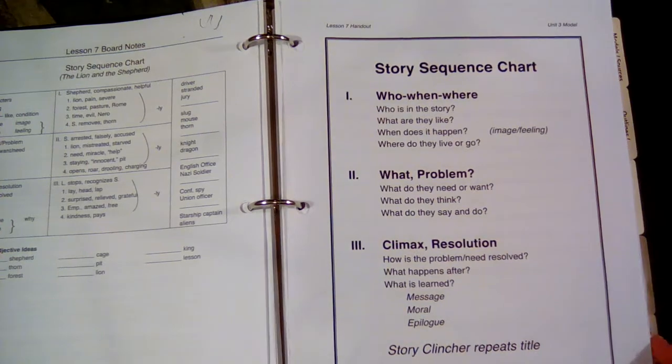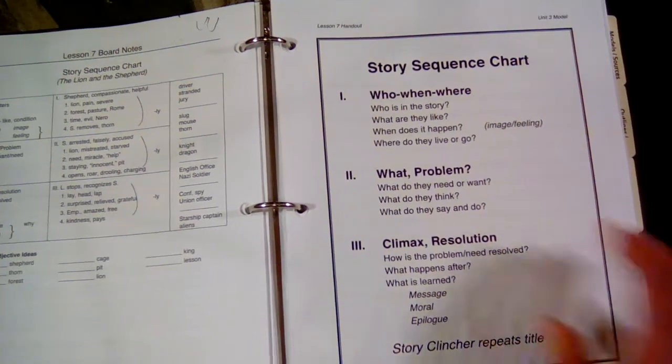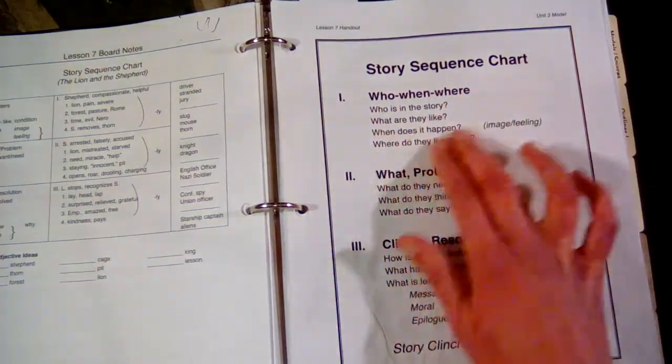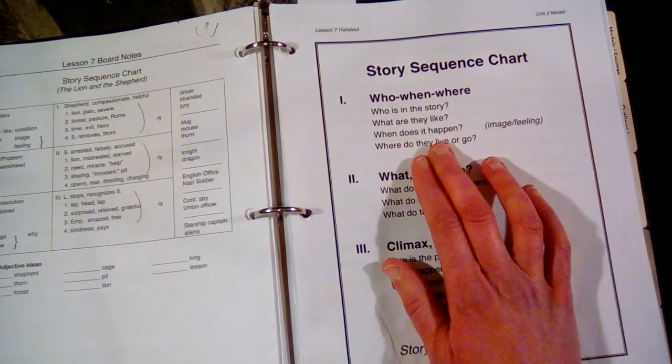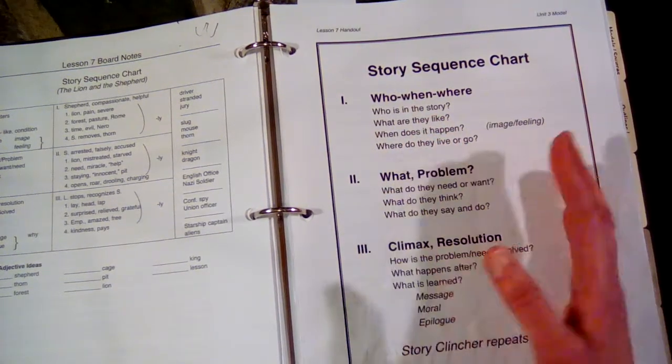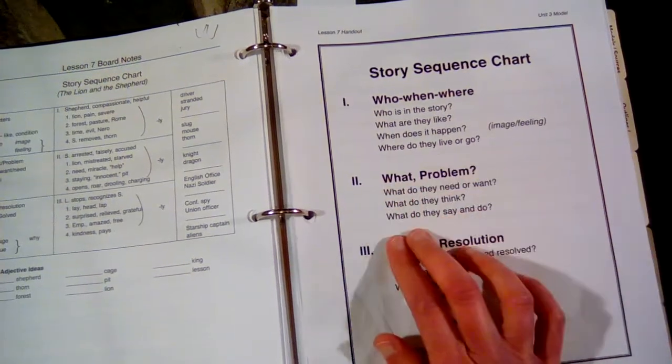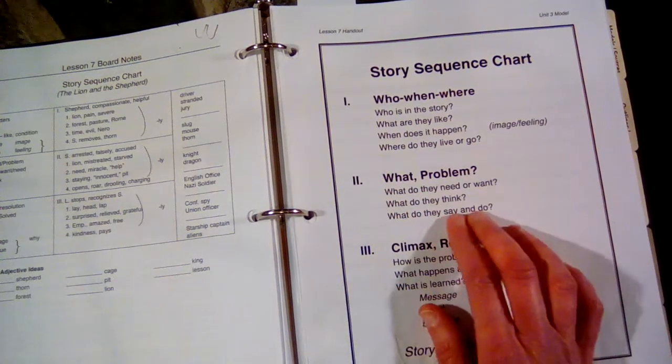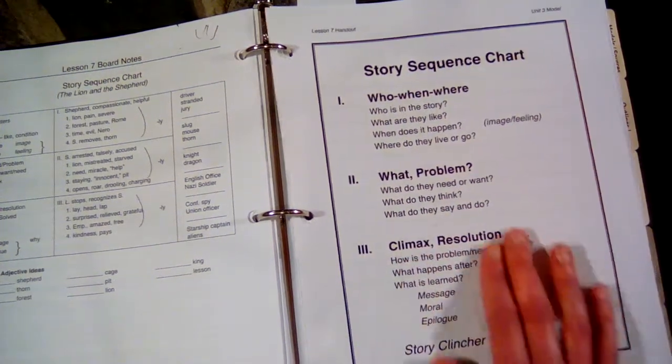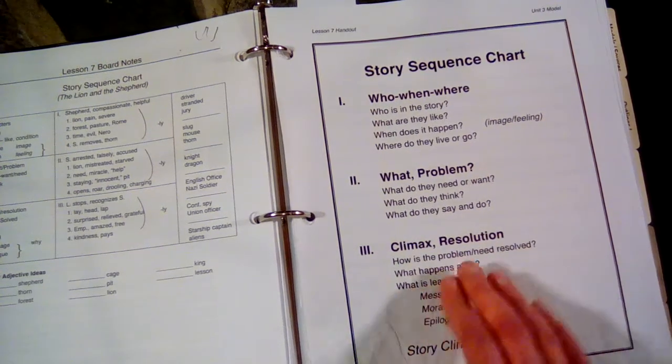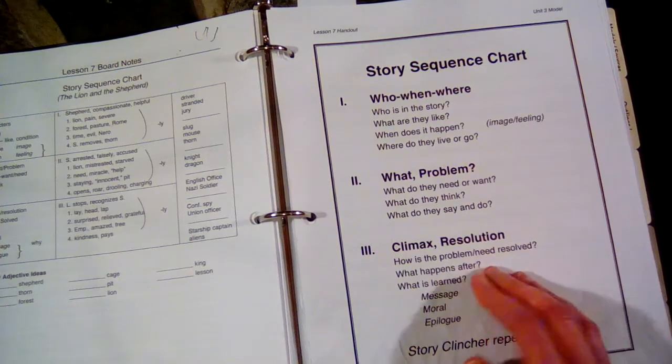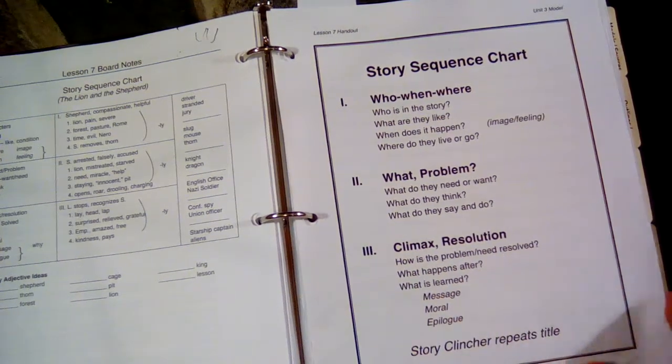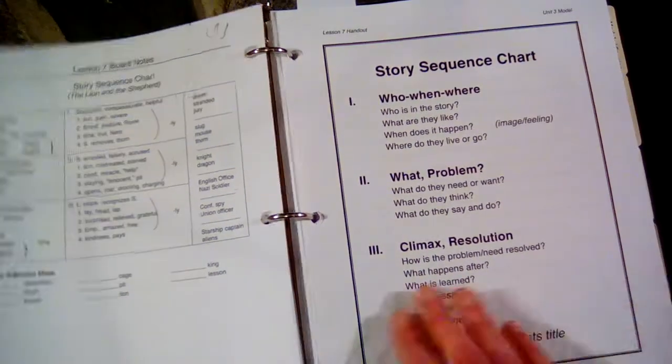This story sequence chart is what the student will be using from here on out, at least in the lessons we have been doing all the way up through lesson 9. The first paragraph needs to discuss these things: who is in the story, when does it happen, where do they live or go. The second paragraph talks about the problem, what they're thinking and doing. In the third paragraph it talks about the climax, how is the problem resolved, and if there is any message or moral or anything learned.